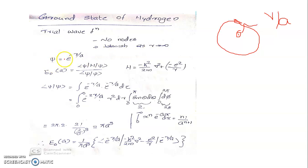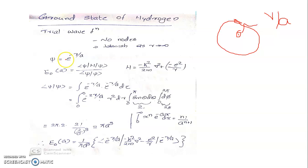Under this assumption, let me take the trial wave function for the ground state as e to the power of minus r divided by a, where r is the radial distance and a is the adjustable parameter. I am considering this as a non-normalized wave function, so in the Rayleigh-Ritz formula I will have to account for the normalization in the denominator. If you wish, you can normalize it by applying the normalization condition — the scalar product over the entire volume integral equal to 1.